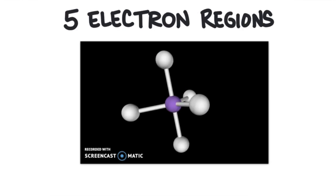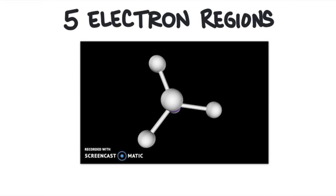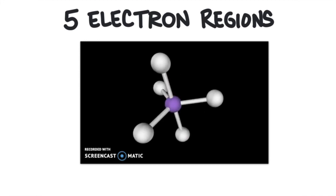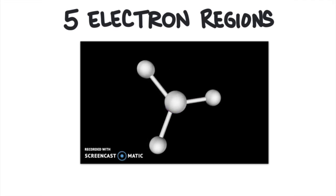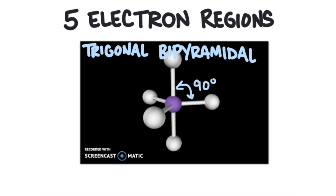Five electron regions will space across the central atom like this. Notice the trigonal shape when looking at it from one angle, and a pyramidal shape on top and on the bottom when viewed another way. So two pyramidal shapes and a trigonal shape — we call it trigonal bipyramidal. There are two angles here: 120 degrees from one perspective, and 90 degrees from another. So we have two possible angles, 120 or 90 degrees, in this type of geometry.